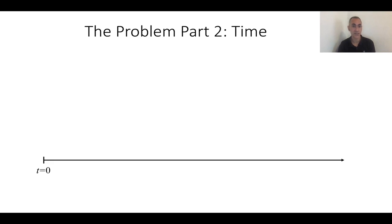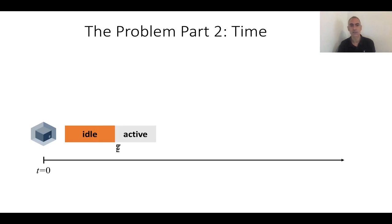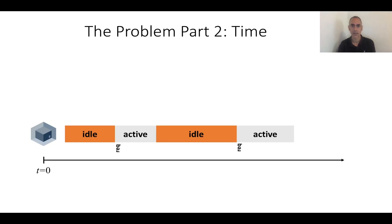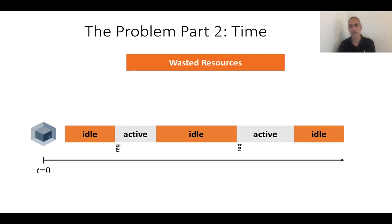The second part of the problem is in the time domain. When you start your virtual machine, in the beginning it's idle. Then at some point a client request comes in, so it's actually doing some useful work — it's active. After that, it goes idle again, and the cycle repeats. Every time it's idle, that's wasted resources — again, money in the trash.